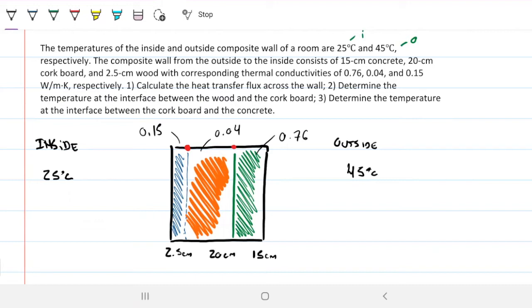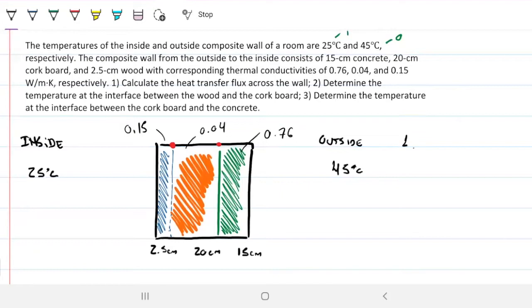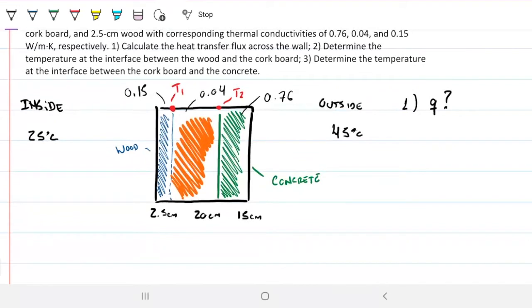One, calculate the heat transfer flux across the wall. So number one is asking us to calculate lowercase Q. Two, determine the temperature at the interface between the wood and the cork board. So this is the cork board, this is the wood, so therefore it's asking us what is the temperature right there. I'm going to call that T1. And number three, determine the temperature at the interface between the cork board and the concrete. So it's going to be this other guy here, which I'm going to call T2. So concrete on this side here, wood on this side here, and then the cork board in the middle. So no curveballs here, no tricks.